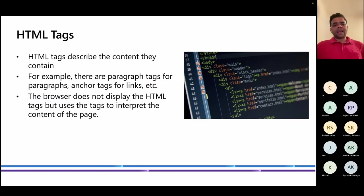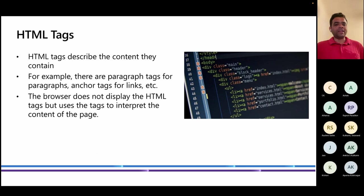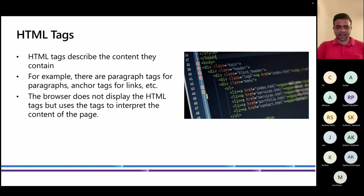HTML has its own tags. When you write HTML code to build a web page, you use different tags. On the image on the right-hand side, you'll see different tags like a tag, body tag, div tag, UL, LI, A tags — these are the different tags using which we build web pages. The browser does not display the tags; the tags work behind the scenes. The browser displays the content included within the tags. Browsers use the tags to process and render the content for the end users.